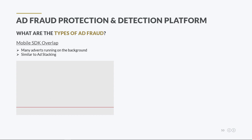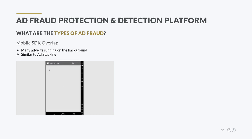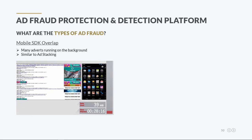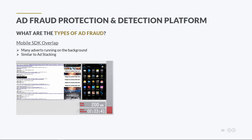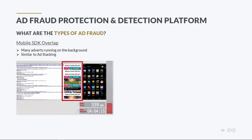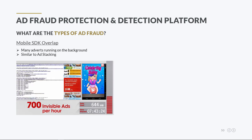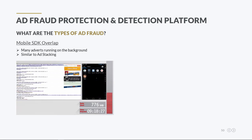The mobile SDK overlap technique is quite popular in the mobile space. In a given mobile app, there might be adverts running from different ad exchanges and networks simultaneously, all in the background. It works like ad stacking, where many adverts load but only one is visible to the human eye. Forensic detected high levels of non-human ad traffic on thousands of mobile apps. These apps begin on startup without being opened and continue to run in the background, serving ads impossible to see and simulating real user activity. Over 700 maliciously hidden ads are served per hour, defrauding advertisers every second. Even when minimized, the app continues to serve ads that will never be seen.